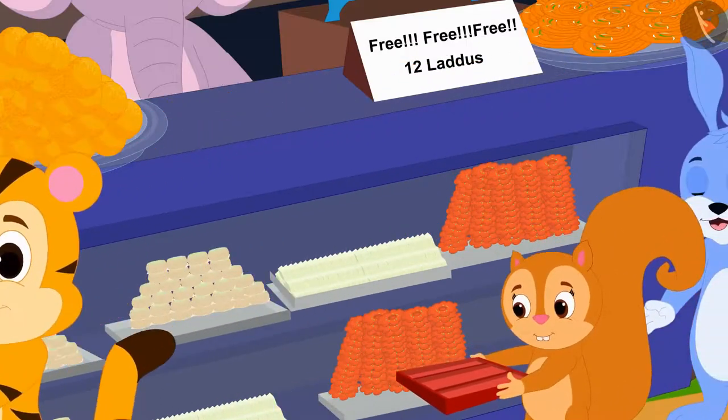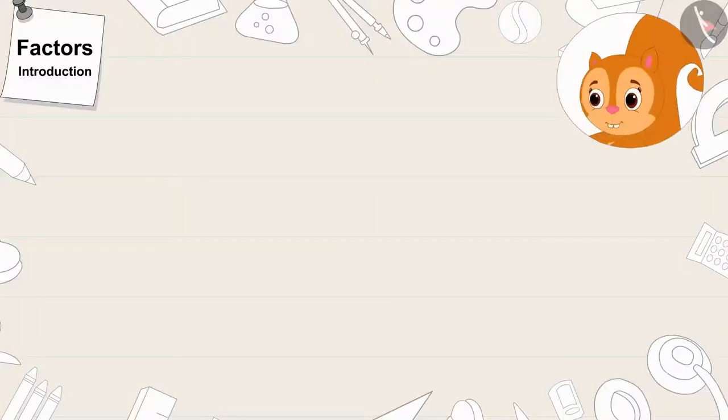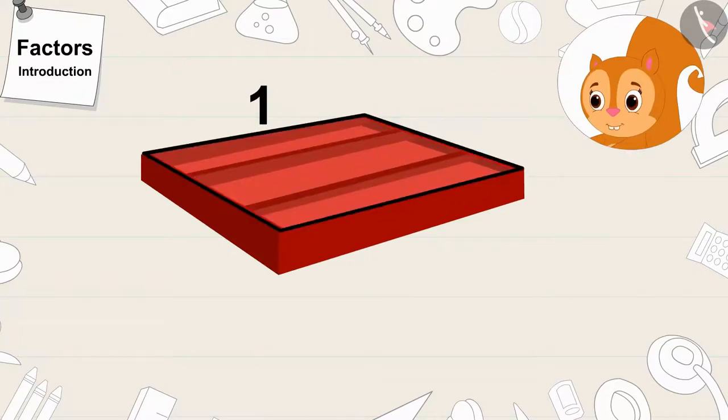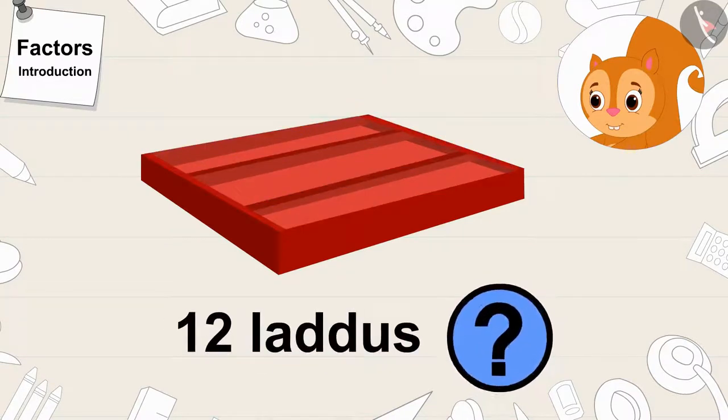Let's see who's next in the queue. Chanda is next in the queue. Chanda's box has 1 vertical line and 3 slots. Will 12 laddus fit in Chanda's box too?